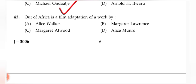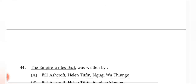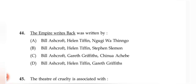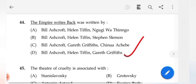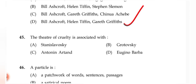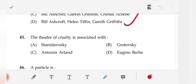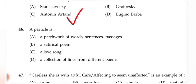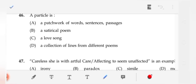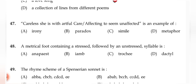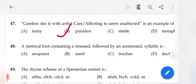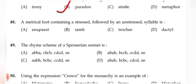Question 44: 'The Empire Writes Back' was written by (D) Bill Ashcroft, Helen Tiffin, and Gareth Griffiths. Question 45: The Theatre of Cruelty is associated with (C) Antonin Artaud. Question 46: A pastiche is a patchwork of words, sentences, and passages — option 1 is correct. Question 47: 'Careless ease with artful care, affecting to seem unaffected' is an example of (B) paradox. Question 48: A metrical foot containing a stressed followed by an unstressed syllable is (C) a trochee.